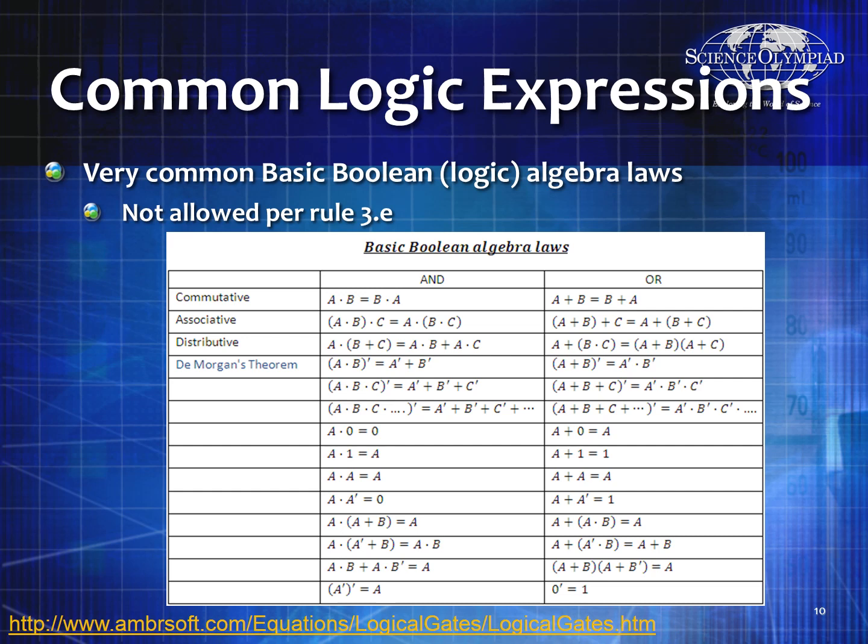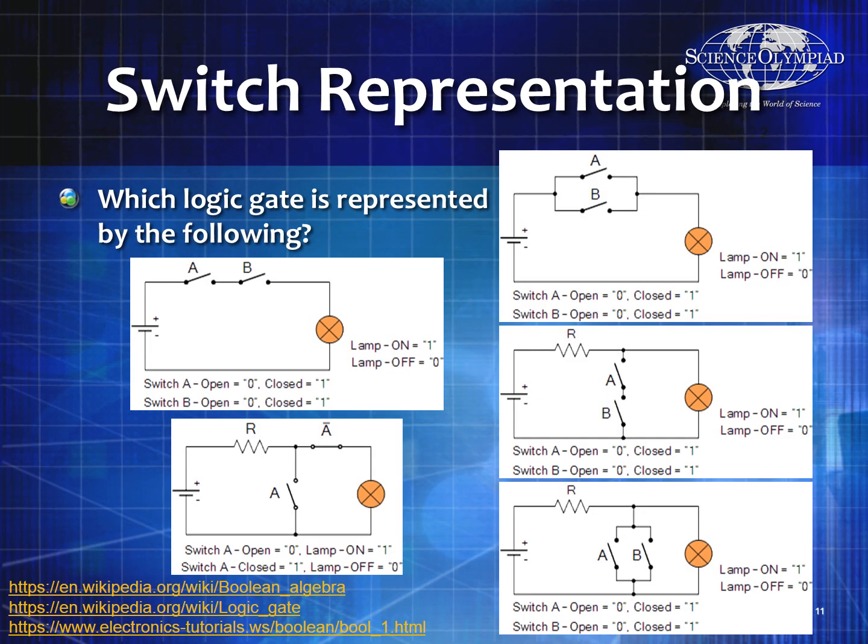This makes it simple to construct a NOR: take A through an inverter and B through an inverter, then put both through an AND gate.